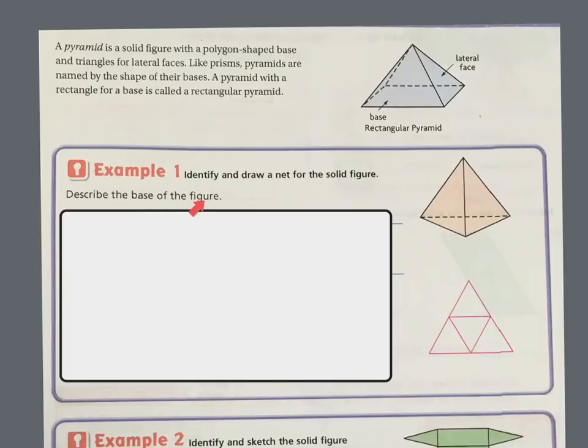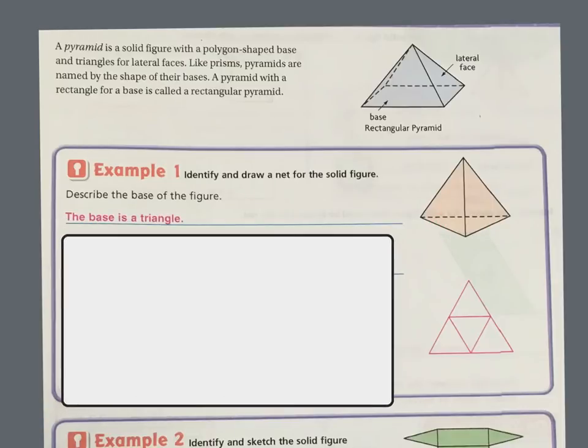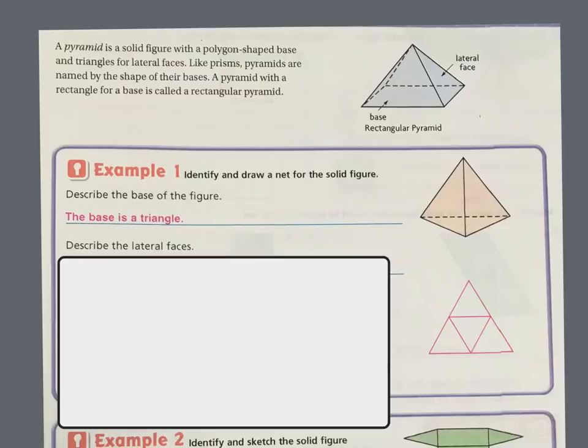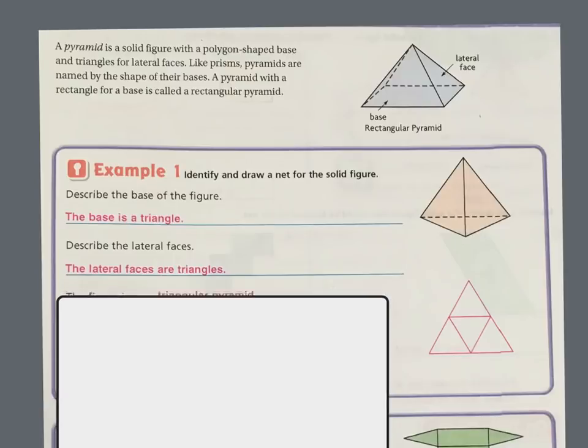So let's describe the base of the figure. So on this one, the base is a triangle. Describe the lateral faces. Well, on this one, the lateral faces, that's these faces right here, they are also triangles. So this figure is a triangular prism.